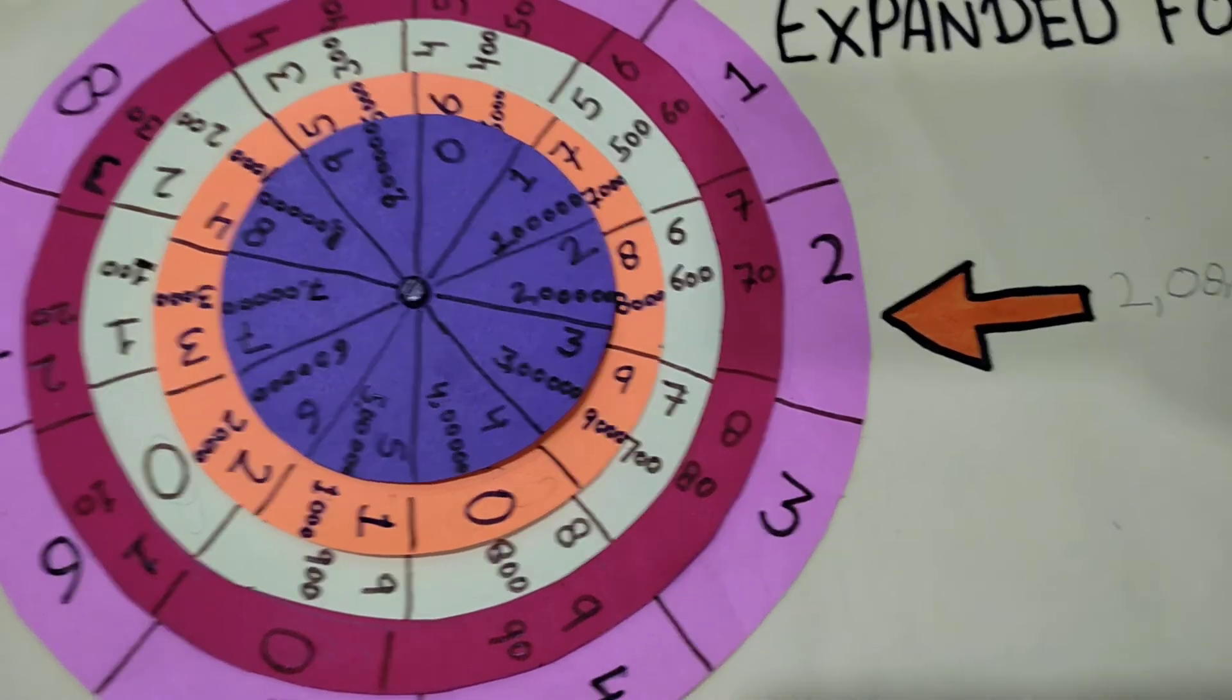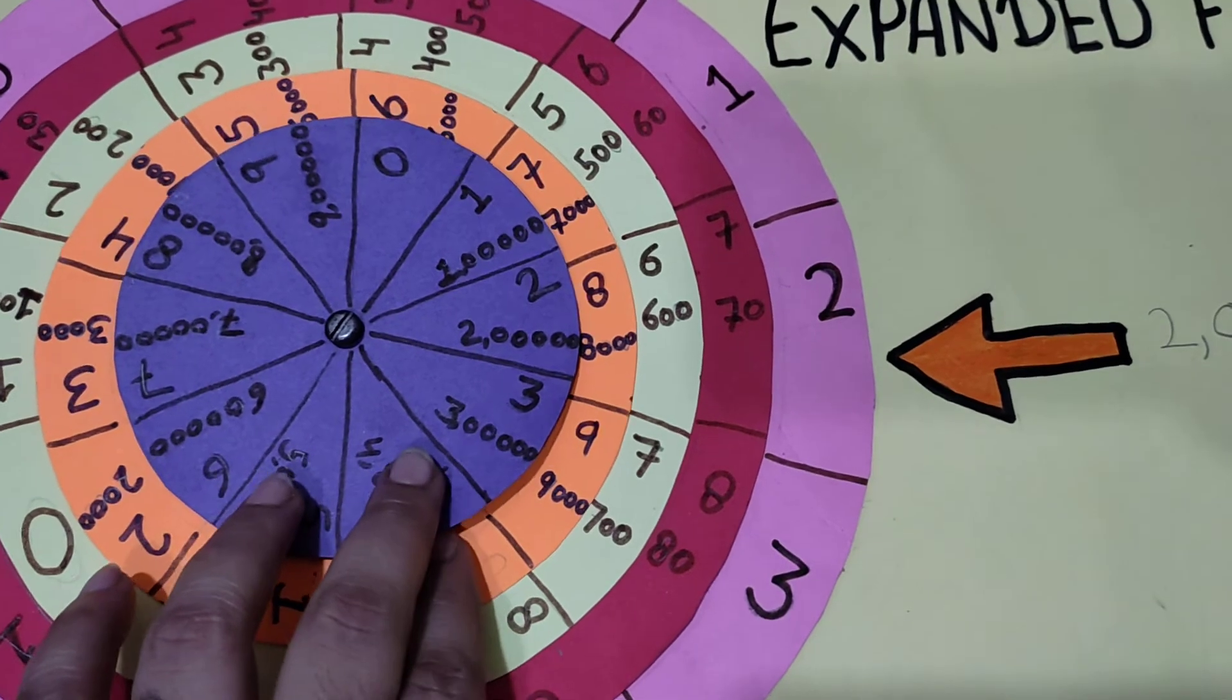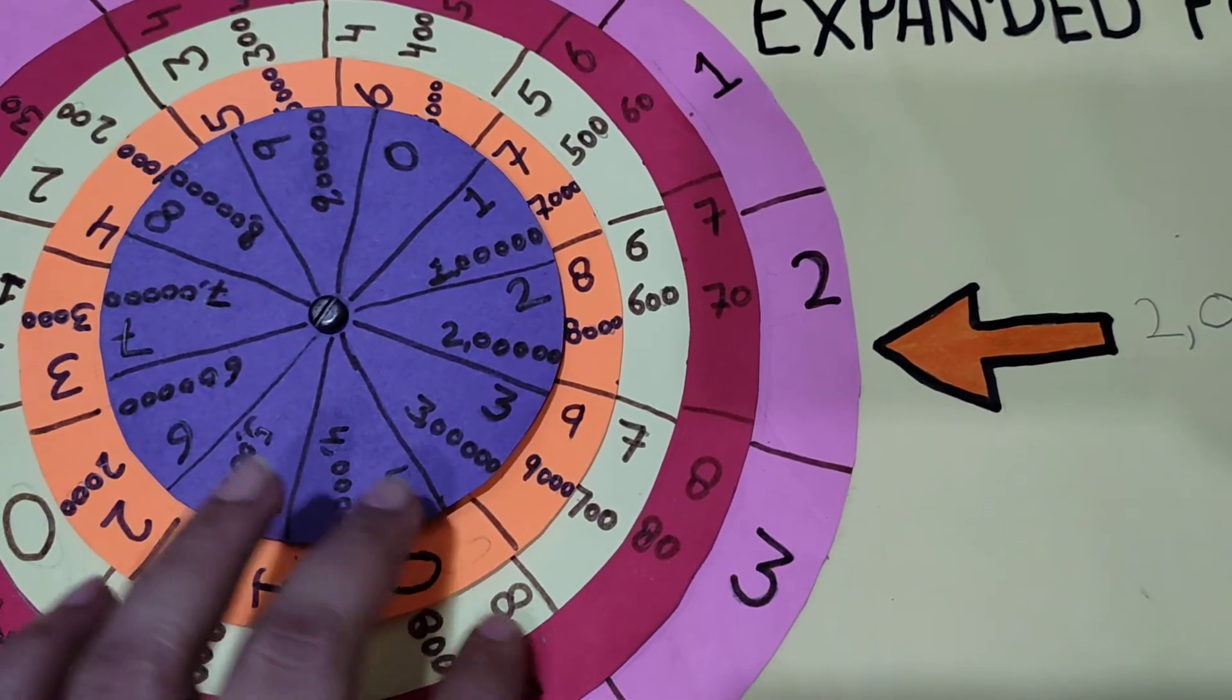This is how it works. If you want to learn the expanded form of other numbers, like 3 lakhs, we can learn the expanded forms of any number.